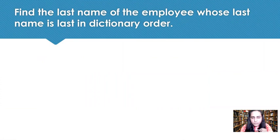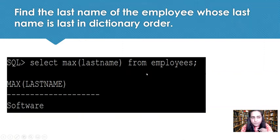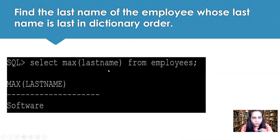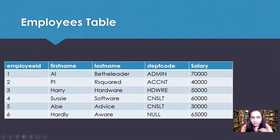The next query is: find the last name of the employee whose last name is last in dictionary order. This is an interesting use of the MAX aggregate function. You write SELECT MAX(last_name) FROM employees. MAX is not just used with numbers — it can be used with strings too. Dictionary order is ascending alphabetical order, so the last name would be the one whose first letter appears last alphabetically. The result is 'Software', and if you check all the last names in the employees table, Software is indeed the one that appears last in dictionary order.